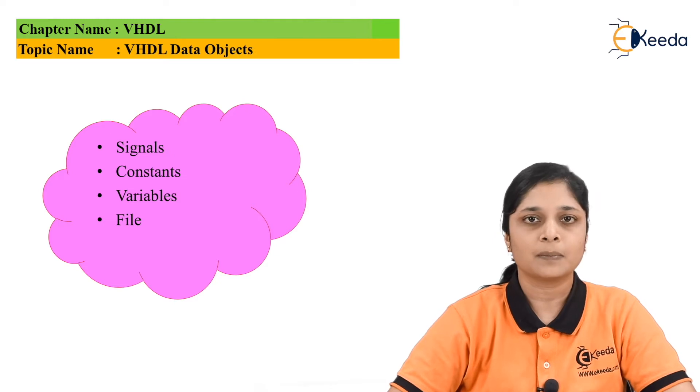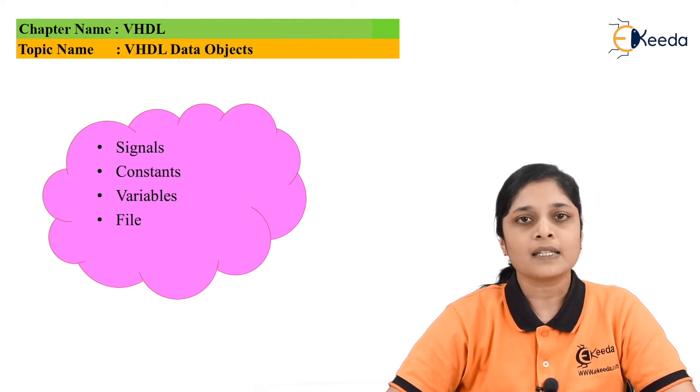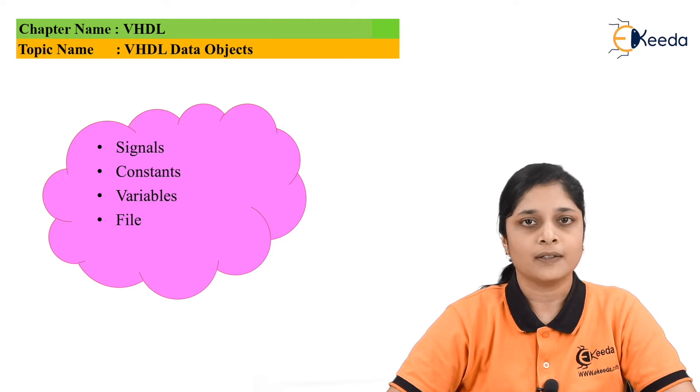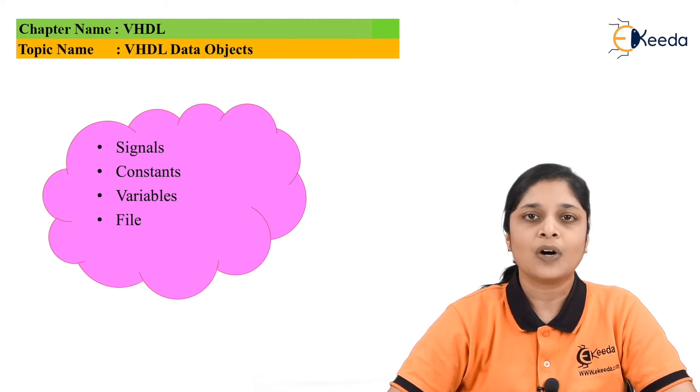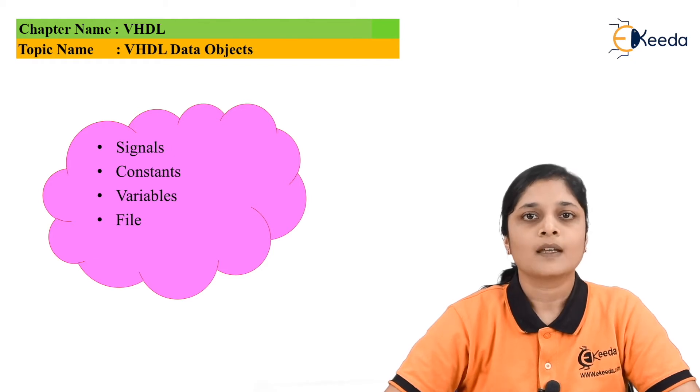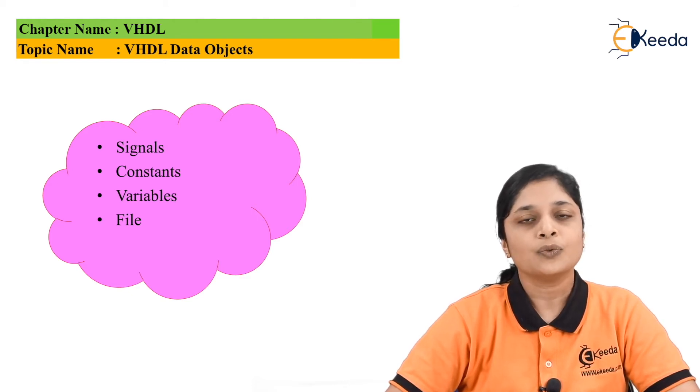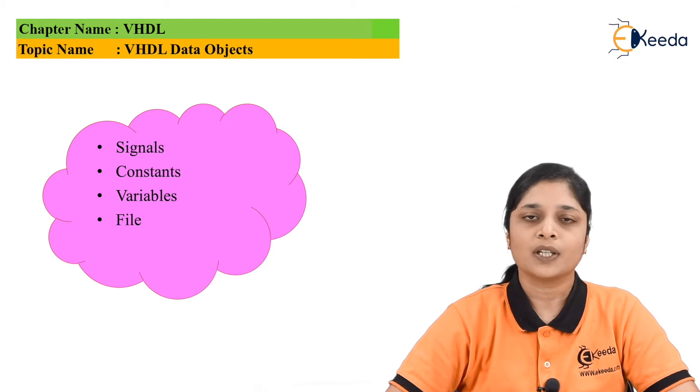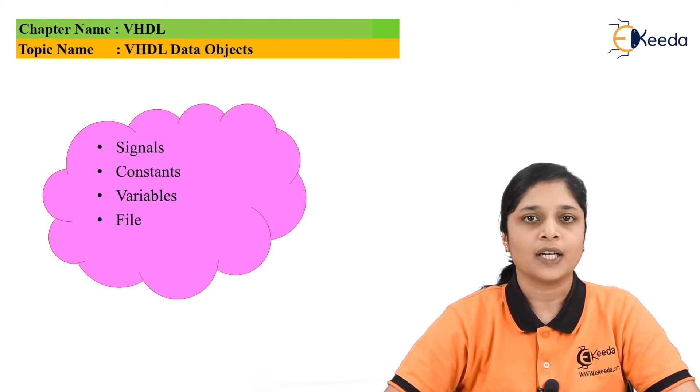The next data object VHDL provides is a file. File is the interface between the program and the host environment. If you want to read the data from file, you can use this data object. And if you want to write any value to the file, then also you can use the data object that is file. This is all about the data object file.